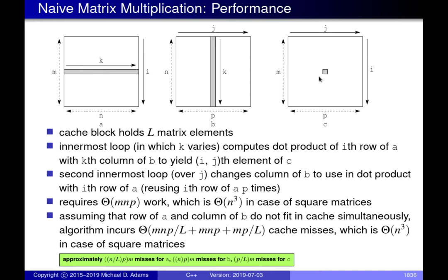For matrix C, we trace elements in raster scan order — left to right, top to bottom. The number of cache misses from C is the number of elements M times P divided by the cache block size L, giving MP/L misses. The cache performance of this naive algorithm is not very good, and we can do much better. Since we're running out of time, we'll stop here for today.